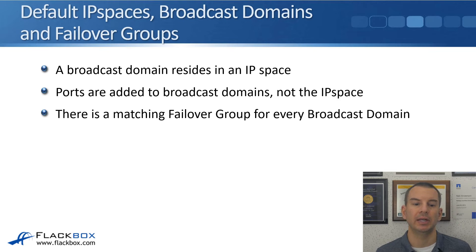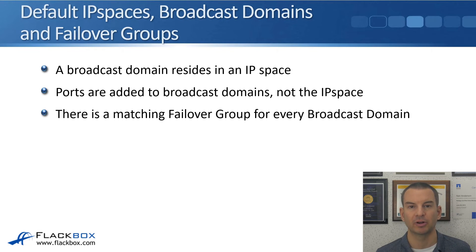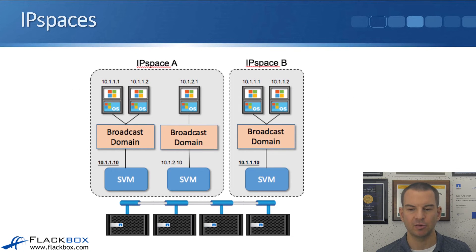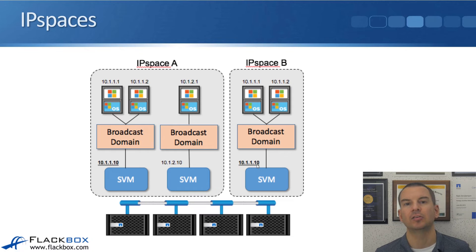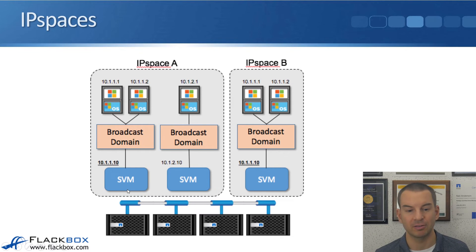Let's look at the relationship between broadcast domains and IP spaces. A broadcast domain resides in an IP space. Ports are added to the broadcast domain, not the IP space, and there's a matching failover group for every broadcast domain. The reason to create an IP space is if you need to support duplicate IP addresses on the cluster. For example, if one SVM has a LIF with IP address 10.1.1.10 and another SVM also needs that same IP address on another LIF, you put them in separate IP spaces — IP space A and IP space B — with broadcast domains inside each.